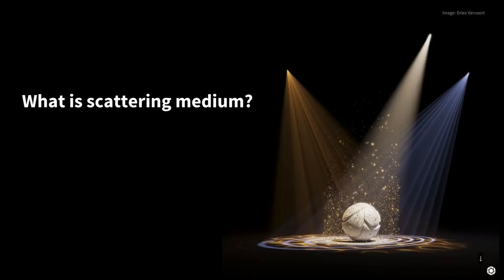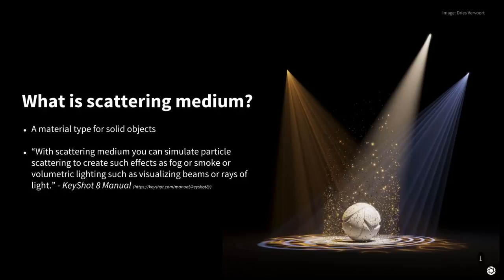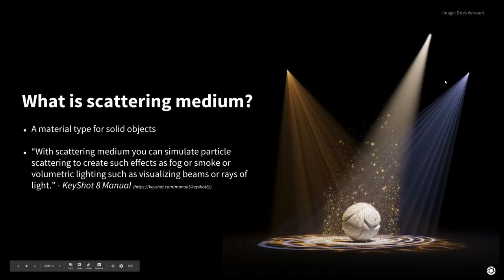So what is the Scattering Medium? It's a material type for solid objects. To use it, you need to have some kind of geometry in your scene that you add this material to, and it should be solid geometry. You need a solid where we have all this scattering happening inside. According to the KeyShot 8 manual, you can create particles and effects like fog, smoke, and volumetric lighting - light rays and beams happen because we have the scattering medium enclosing the scene.